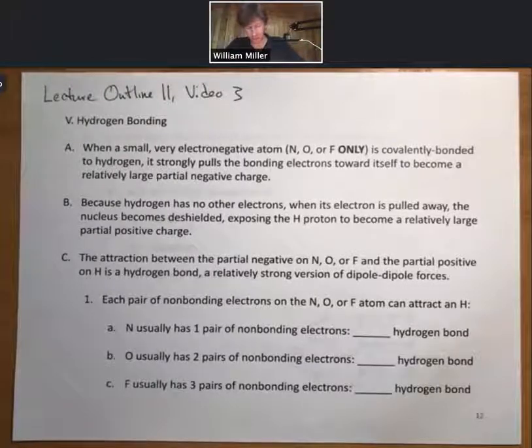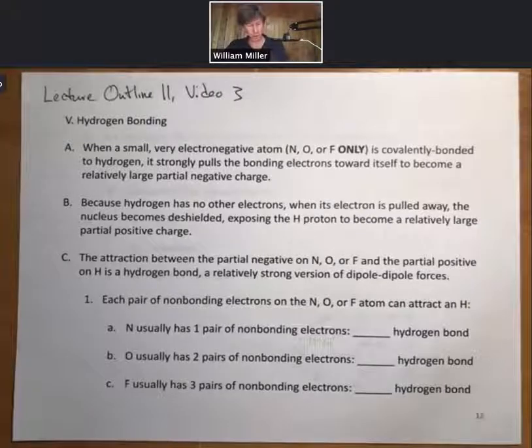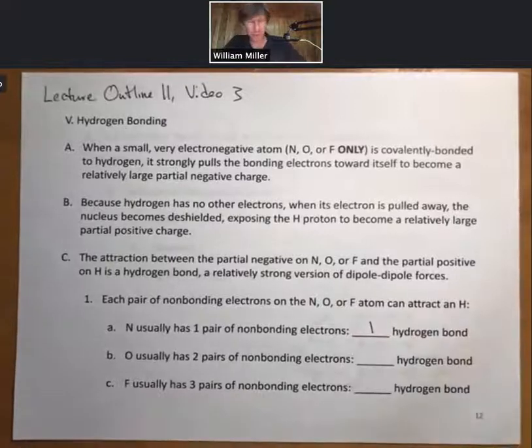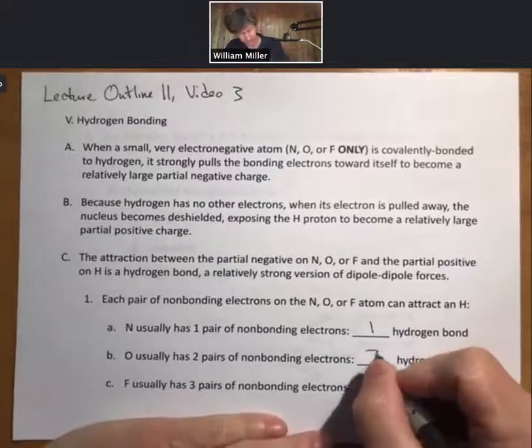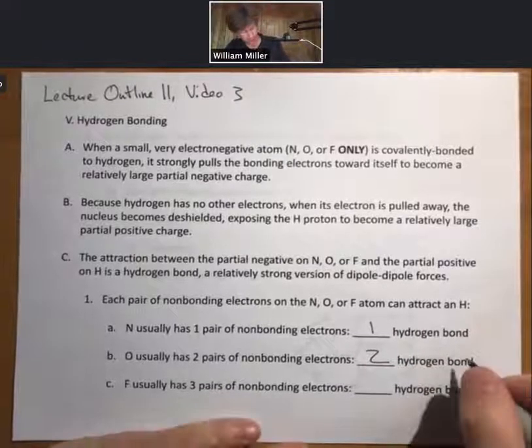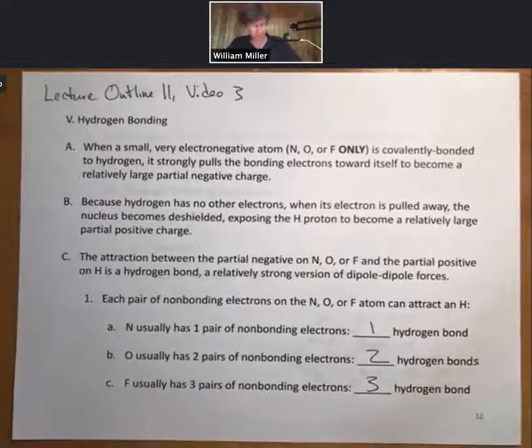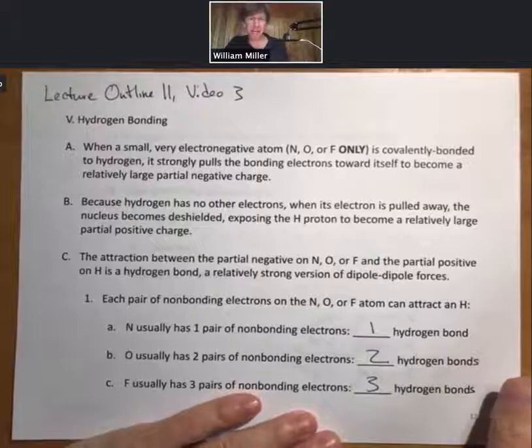So each pair of non-bonding electrons on the nitrogen, oxygen, or fluorine atom can attract an H. So N usually has one pair of non-bonding electrons. It will form one hydrogen bond to that pair of electrons. Oxygen has two pairs. It will form two hydrogen bonds. Fluorine has three pairs of non-bonding electrons and will form three hydrogen bonds, as we'll see.